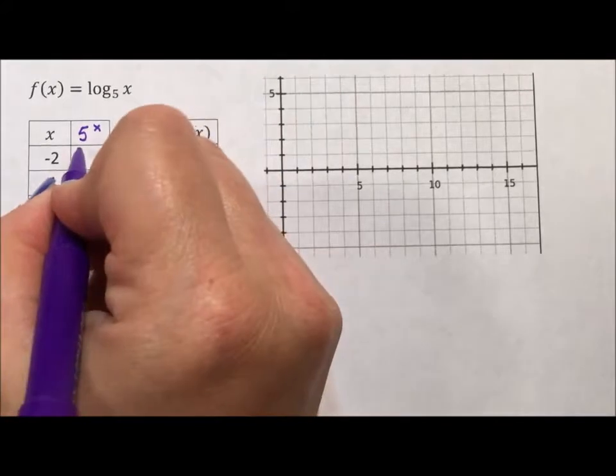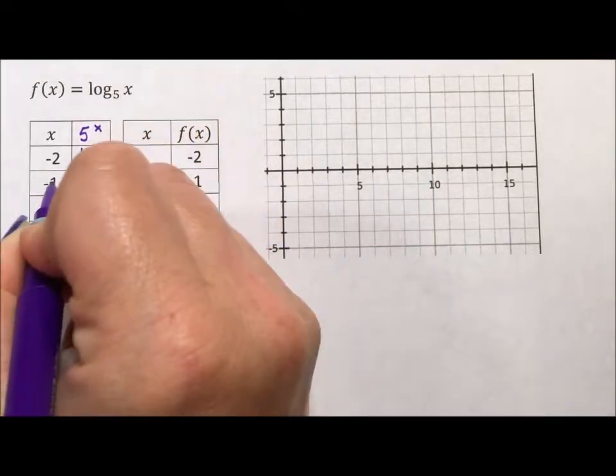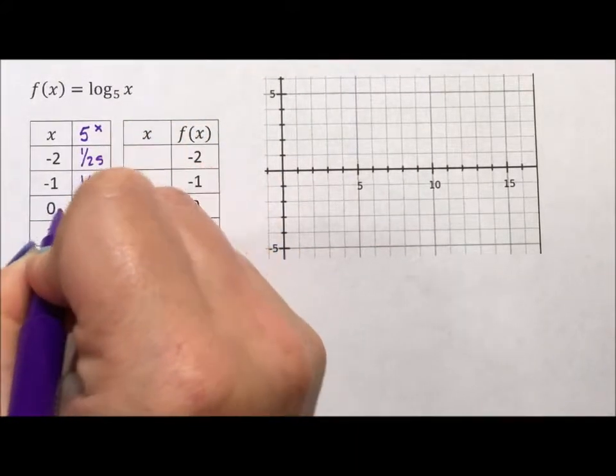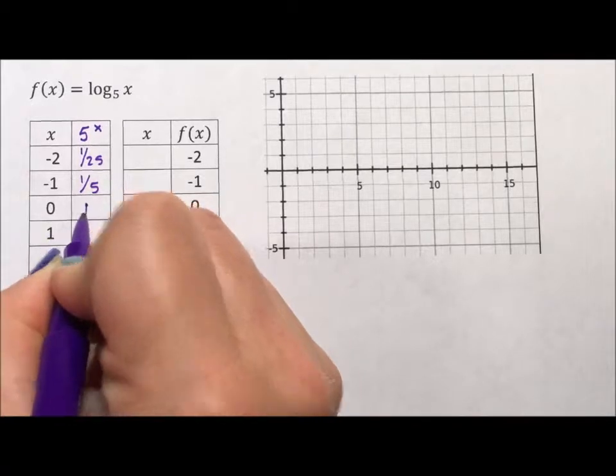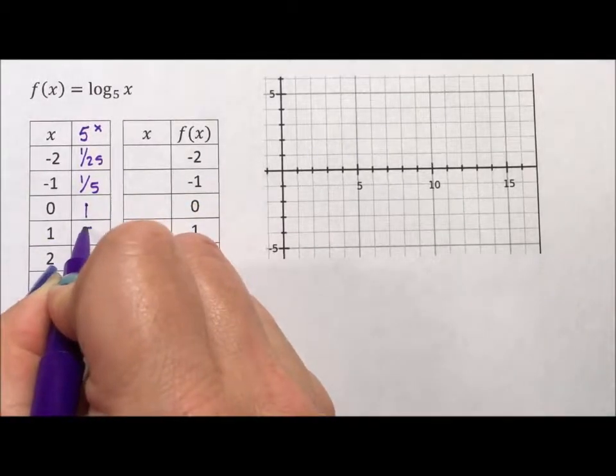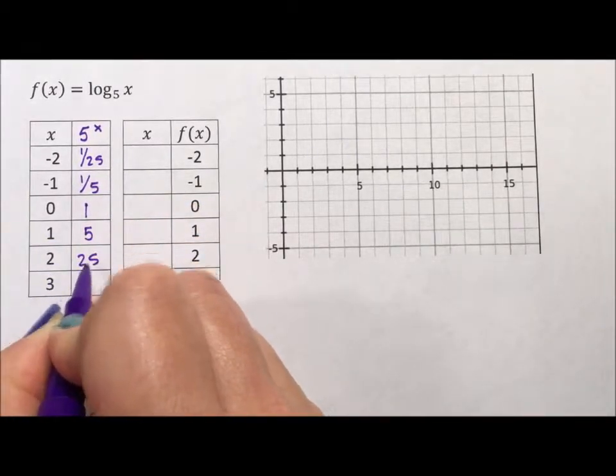5 to the negative 2 is 1 over 25. 5 to the negative 1 is 1 fifth. Anything to the power of 0 is 1. 5 to the first power is 5. Then we have 25 and 125.